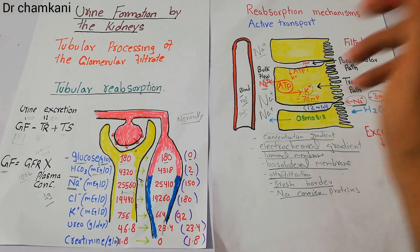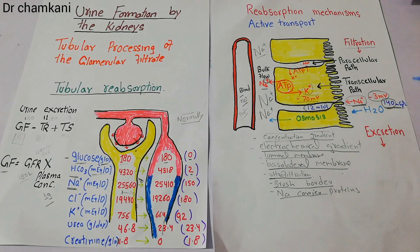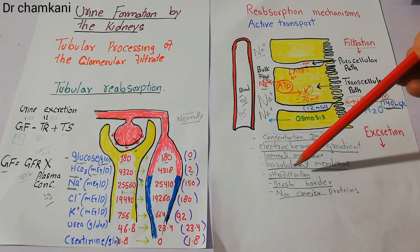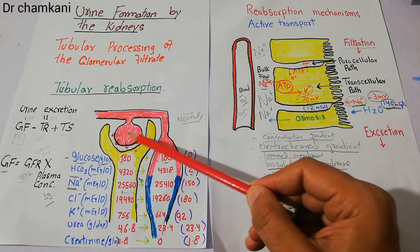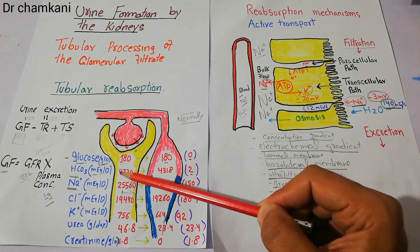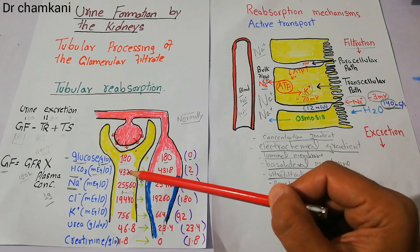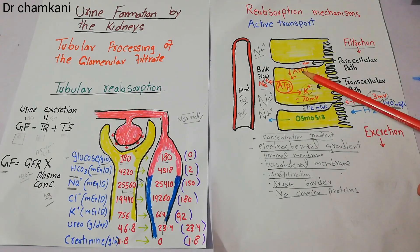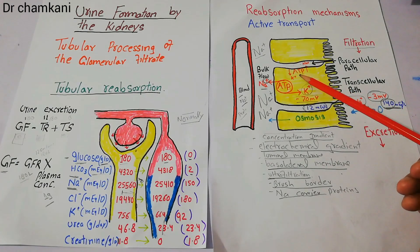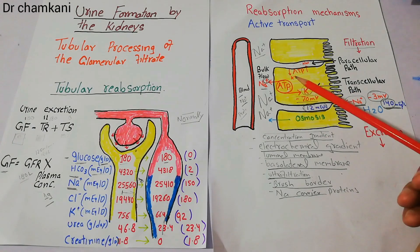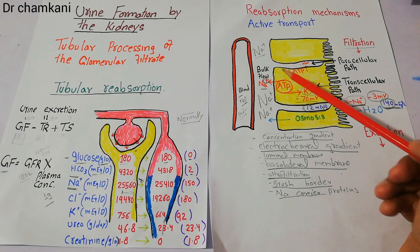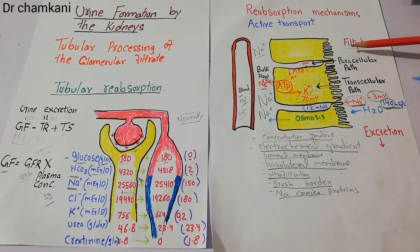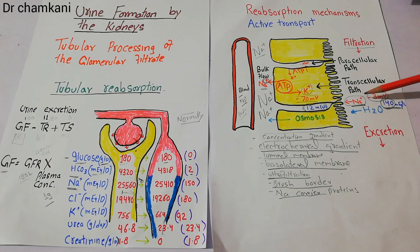To summarize primary active transport of sodium: key terms are concentration gradient, electrochemical gradient, luminal membrane, basolateral membrane, ultrafiltration, brush border, and sodium carrier proteins. Sodium is filtered from the glomerular capillaries into Bowman's capsule, then enters the proximal tubule. Sodium enters these cells from the lumen because inside the cells the amount of sodium is low. The amount is low because sodium-potassium ATPase pumps use energy from ATP to throw sodium out of the cells into the interstitium, so the intracellular sodium concentration is kept low while the tubular lumen remains high, creating a concentration gradient.